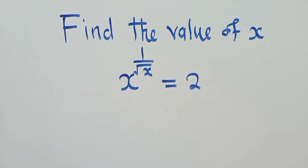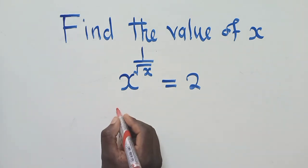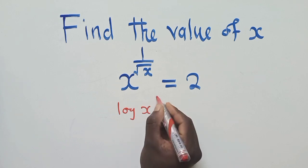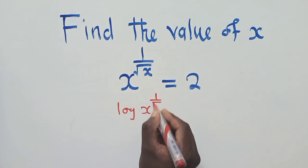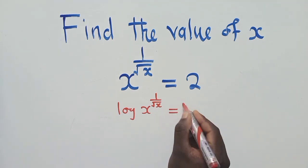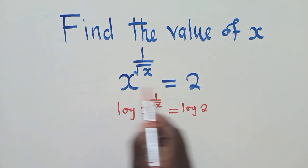We need to find the value of x. Without wasting much time, we apply log to both sides: log of x to the power one over root of x is equal to log 2.